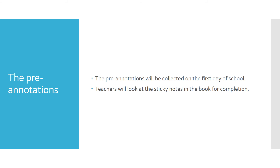The pre-annotations — those four paragraphs — will be collected on the first day of school. Teachers will also take a look at the sticky notes in the book for completion. There should be around 20 sticky notes, and each sticky note should have a label that explains what it corresponds to. Sticky notes are something the teacher will glance at to make sure they are placed throughout the book, not all in the last few pages or the first few pages, and that they seem to be placed in a thoughtful fashion with the label on them so teachers can see to what note they correspond.